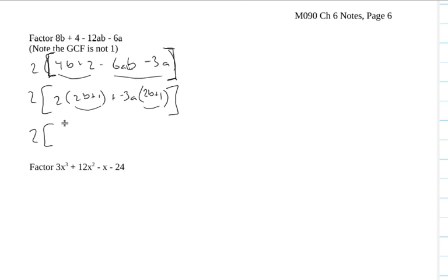So we've got 2 times, well, 2b plus 1. That's the common factor that I'm writing out. And then I'm opening up my parentheses, and I'm saying what's left over from this term. There's a 2. And what's left over from this term? Minus 3a.